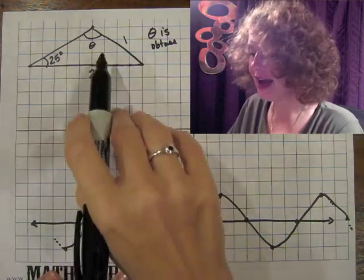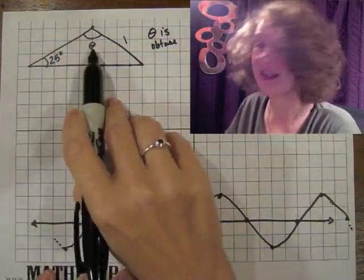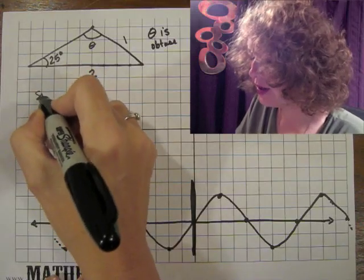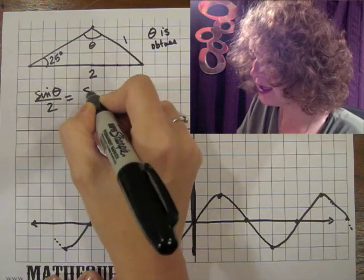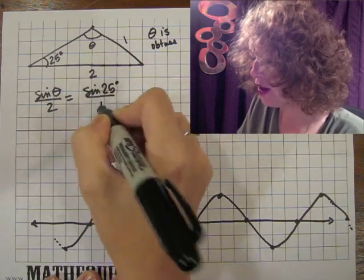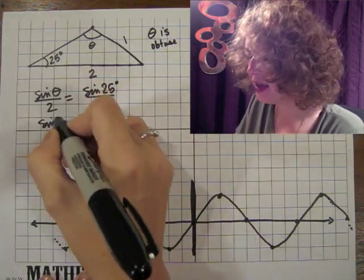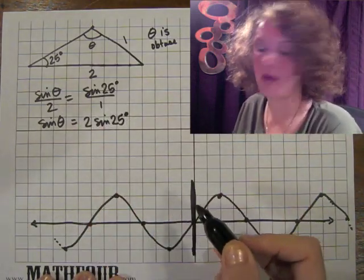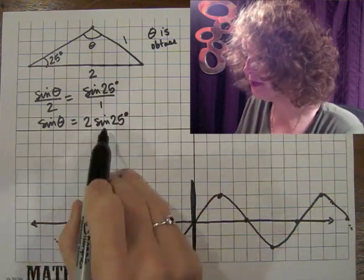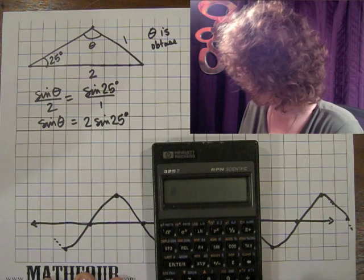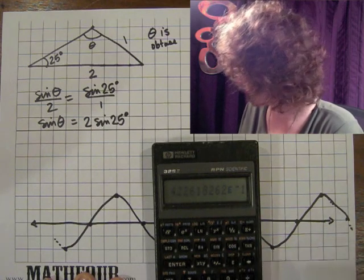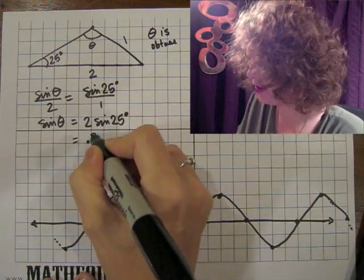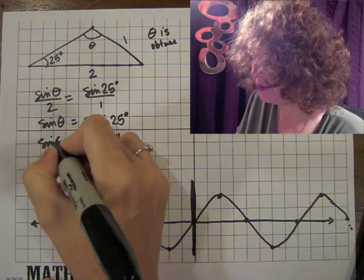So let's look at one. Here I have a triangle and I've designated theta as obtuse, keeping this simple so we can see what's going on. Using the law of sines, I know sine theta over 2 equals sine 25 over 1, so the sine of theta is going to be 2 times sine of 25 degrees. Using the calculator, sine of 25 degrees times 2 is roughly 0.845.